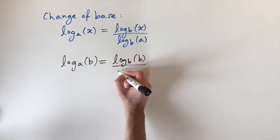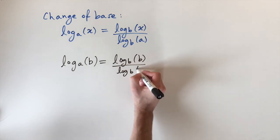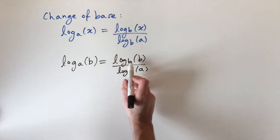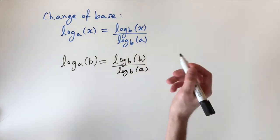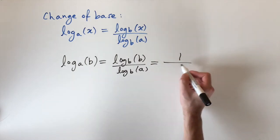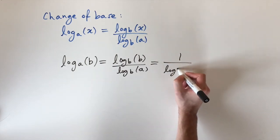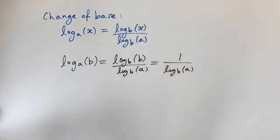then just plugging it into this formula we have log base b of b divided by log to the base b of a. And now we know that log of b of b is just equal to 1.